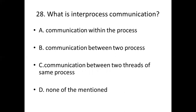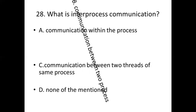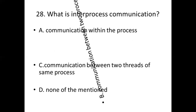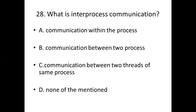Twenty-eighth bit: What is inter-process communication? Option A: Communication within the process. Option B: Communication between two processes. Option C: Communication between two threads of the same process. Option D: None of them mentioned. Answer: Option B, communication between two processes.